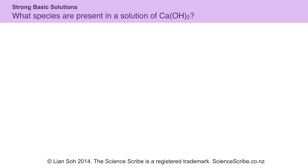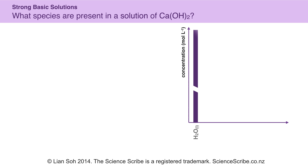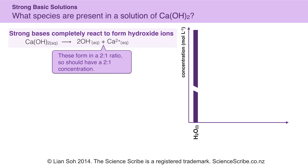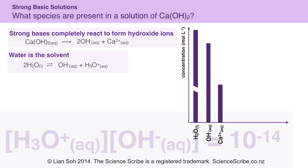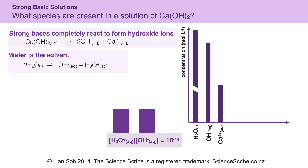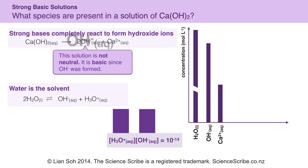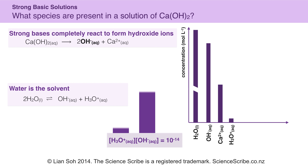In another strong base example, this time with calcium hydroxide, my opening strategy stays the same. Because it's a base, my equation is for a base. This time I make twice as many hydroxide ions compared to calcium 2+, so I get a double concentration of hydroxide compared to calcium 2+. Water is still my solvent, and just like before, I have more hydroxide than hydronium because this is an alkaline solution.